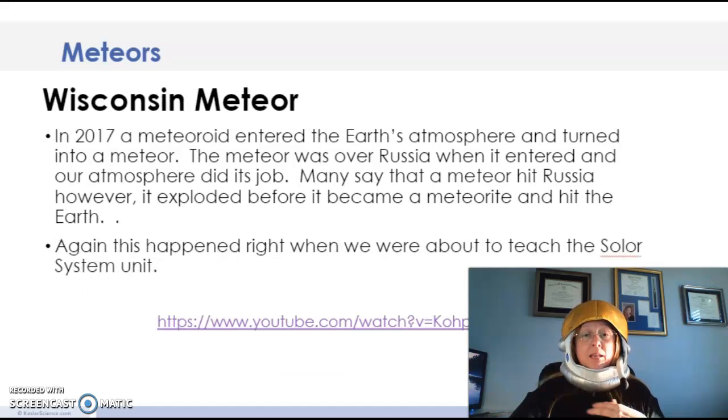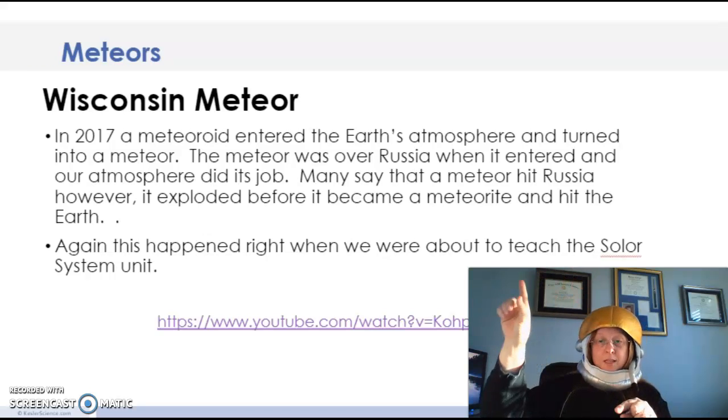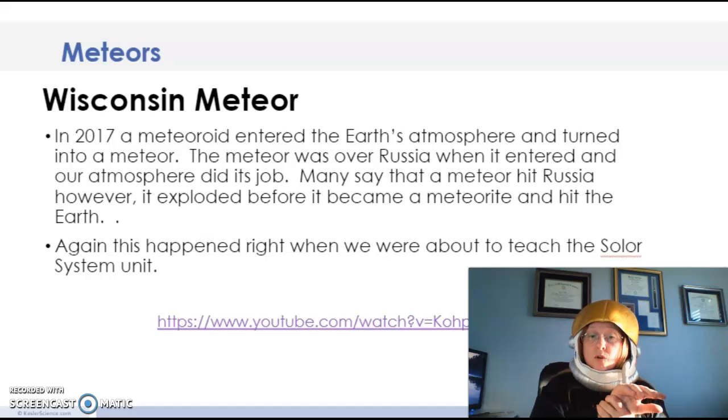And another one to talk about is the Wisconsin meteor. In 2017, there was a meteoroid out there in space orbiting the sun, entered the earth's atmosphere and turned into a meteor. I see this still says Russia. It looks like these notes need to be updated. The meteorite was coming in and it did not hit too hard. But there is a video here to talk about the Wisconsin meteor. And this, again, was a coincidence because the sixth grade science team at that time was about to teach about the solar system. So pretty cool coincidence there.